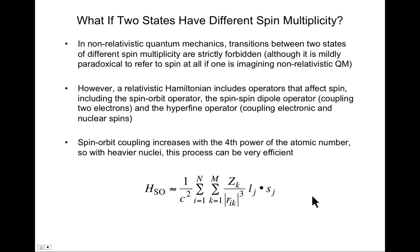Now, what about the case where two electronic states have different spin multiplicity? In non-relativistic quantum mechanics — where spin is added on as a post hoc treatment — transitions between two states of different spin multiplicity are strictly forbidden. Most of the theories we've discussed, Hartree-Fock theory and post-Hartree-Fock theories, treat spin as something of an afterthought.